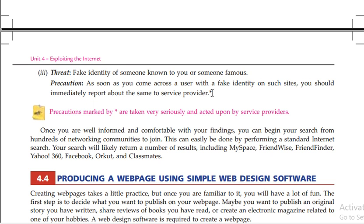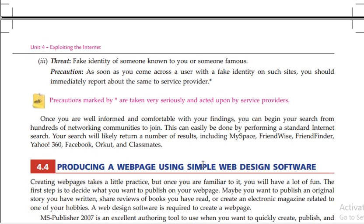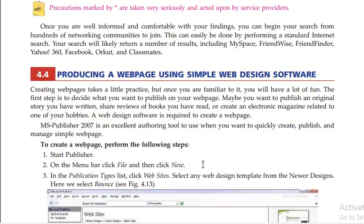Your search will likely return a number of results including MySpace, Friendwise, FriendFinder, Yahoo 360, Facebook, Orkut, classmates, RSM, and other social media platforms through which you are able to communicate with people around the world, especially when doing social networking.